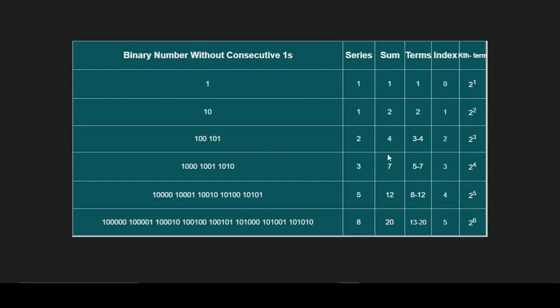All of these sums are stored in the array as discussed in the algorithm. Looking at the Kth terms: the first term is 1, the second term is 10. Starting from 100, there are two valid values — so those cover terms 3 and 4. At 1000 there are three terms covering 5 to 7, then 8 to 12, then 13 to 20. The range increases as the number of zeros in the binary number increases.